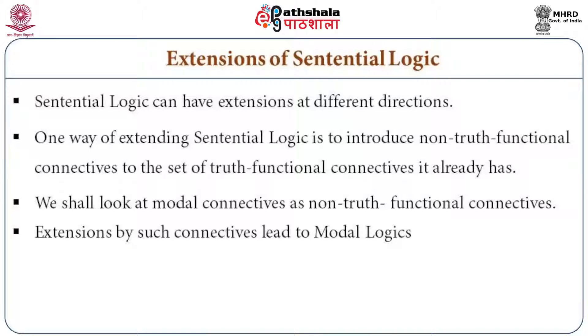We have done in our earlier modules different systems of sentential logic and we have seen that we can evolve different ways or mechanisms of checking validity of arguments or truth of logical sentences — whether it's the truth tree method, axiomatic system, natural deduction system, or the basic truth table. Here we will try to extend this sentential logic. Apart from the existing set of connectives — those truth functional connectives — we will introduce some more connectives, with the difference that these new connectives are not truth functional; they are more like quantifiers such as the universal quantifier or existential quantifier.